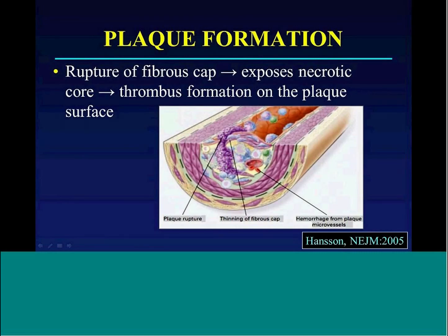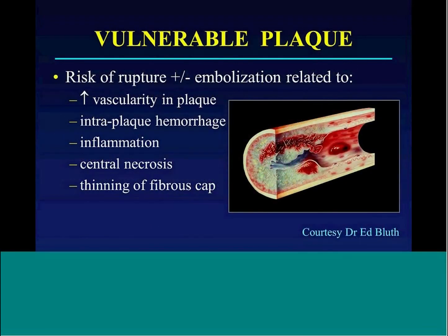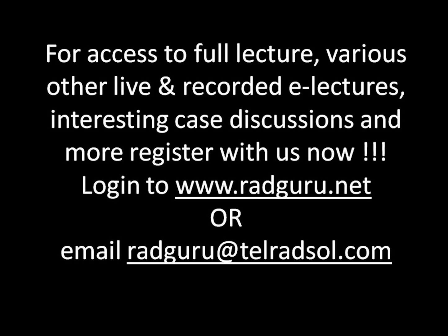The necrotic core is very thrombogenic. Thrombus forms on top of the thin fibrous cap at the site of rupture. It is that unstable thrombus that gets knocked off by the blood flowing over the plaque, resulting in distal embolization and stroke. Ultimately, the risk of rupture of the plaque and the formation of thrombus is what drives stroke risk.